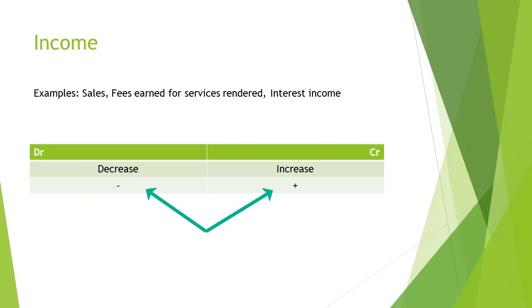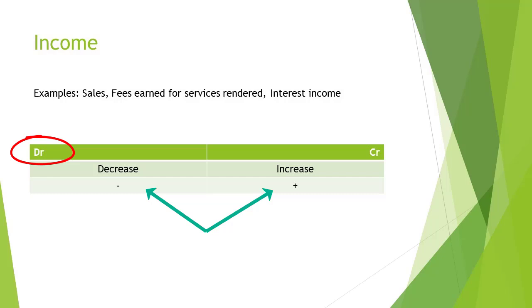Income also has an effect on equity — it increases equity on the credit side and decreases equity on the debit side. As a general rule, all income earned will be recorded on the credit side because it increases. Every once in a while, you might have a correction to income because something was recorded incorrectly, and then you will debit the income account and it will decrease.